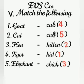Goat — kid. Cat — kitten. Hen — chick. Tiger — cub. Elephant — calf.